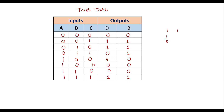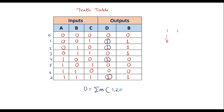By looking at the truth table, I can write the minterm expression in SOP form. Considering the difference column and marking only the rows with high output: D equals summation m(1, 2, 4, 7). Similarly for borrow, looking at where the output is 1, the corresponding minterms are 1, 2, 3, and 7. So borrow equals summation m(1, 2, 3, 7).